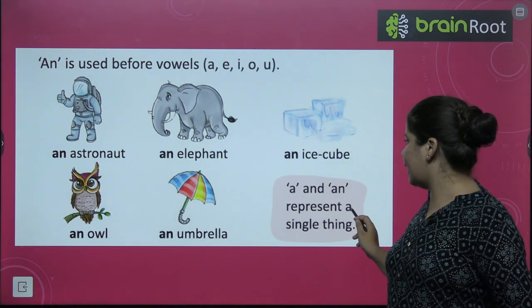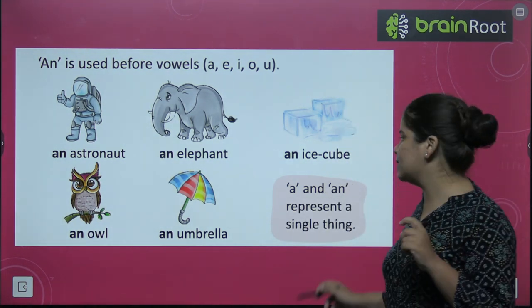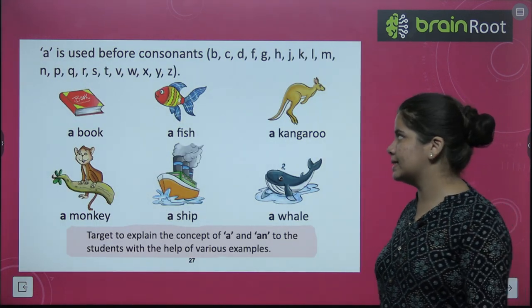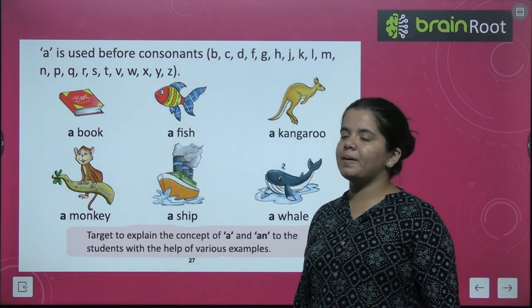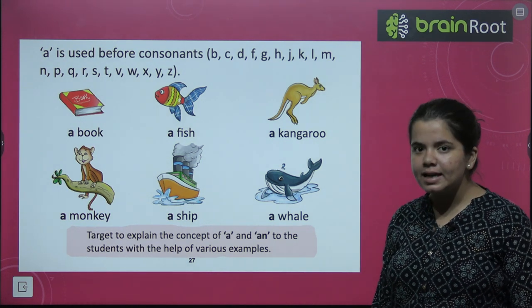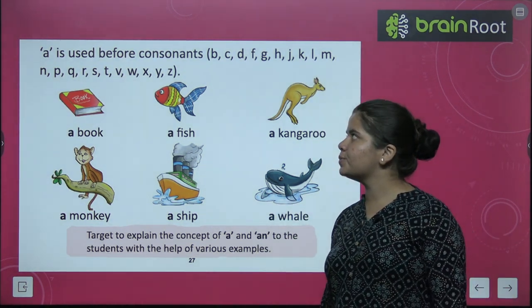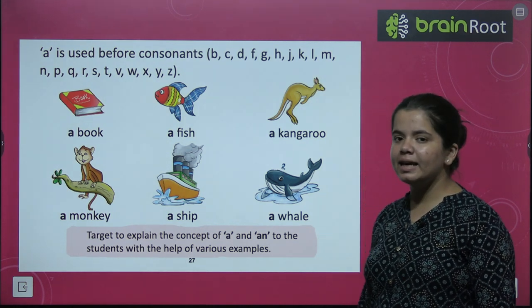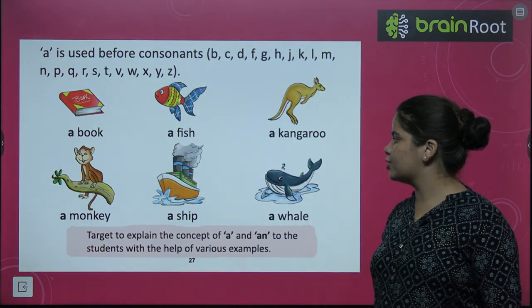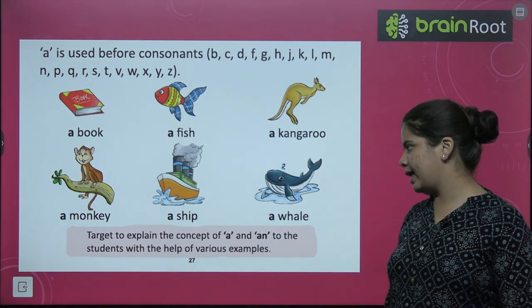A and An represent a single thing. A is used before consonants. For example: a book, a monkey, a fish, a ship, a kangaroo, a whale.